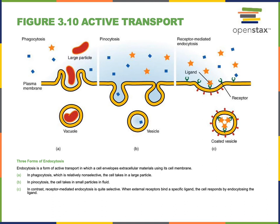In contrast to exocytosis, endocytosis is an active transport mechanism that moves material from the extracellular space into the cytoplasm. There are three major forms of endocytosis.